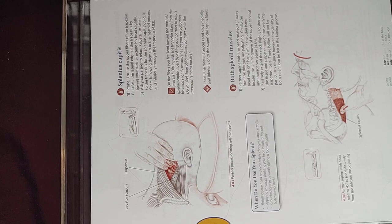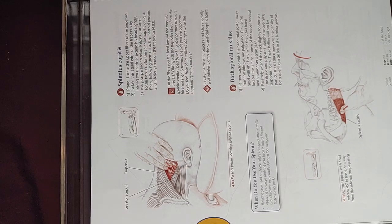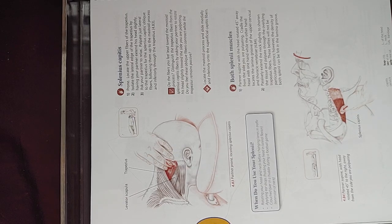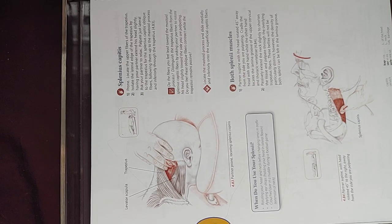Follow the fibers up to the mastoid process and inferiorly to the trapezius. Ask yourself these questions to confirm: Do the fibers you feel lead toward the mastoid process? Distinguish the trapezius fibers from the splenius capitis fibers by asking your partner to rotate the head slightly toward the side you are palpating. You should feel the oblique fibers contract while the trapezius remains passive.